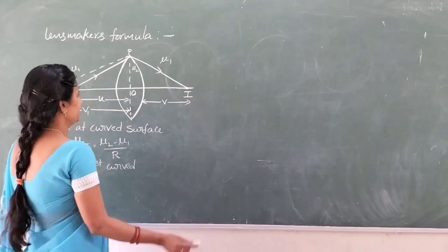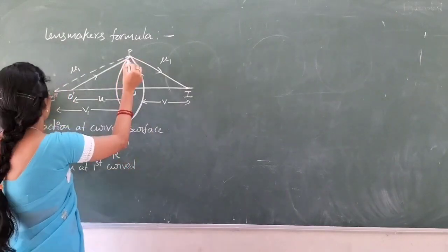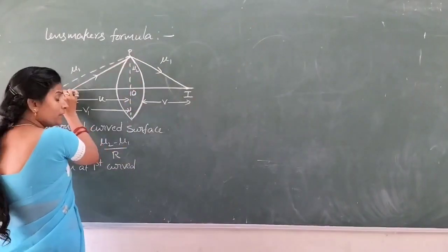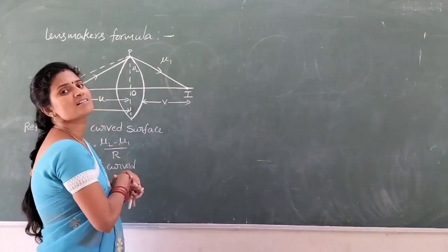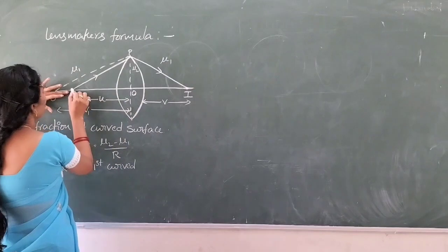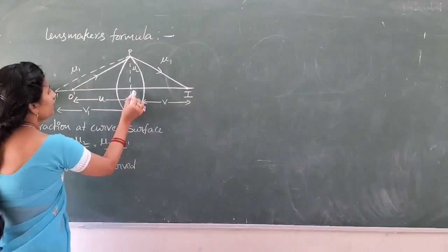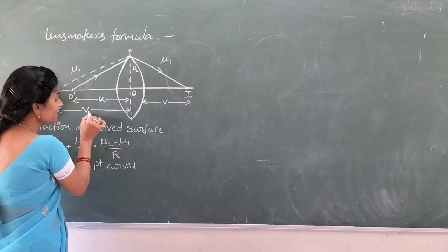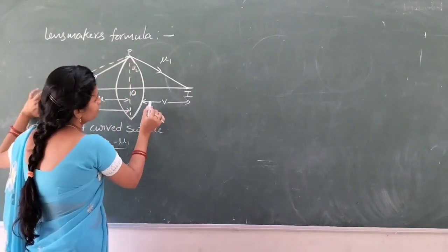The virtual object of the second curved surface forms an image at I. O'P is the incident ray of the first curved surface, P O'' is the image of the first curved surface, and P O'' acts as a virtual object of the second curved surface. P I is the image of the second curved surface. The distance from the optic center to the object is the object distance U, and the optic center to image distance is V₁ for the first curved surface.